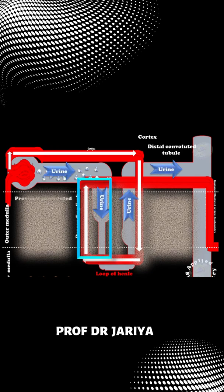So water moves from the urine into the hyperosmotic vasa recta and medulla. This interplay between the loop of Henle and the vasa recta is called the counter-current multiplier.